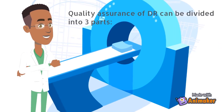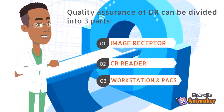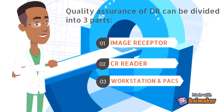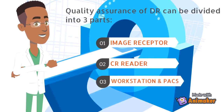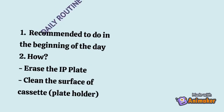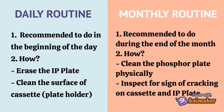Quality assurance of digital radiography can be divided into three parts: image receptor, CR reader, and the third part is workstation and PACS. The quality assurance can be conducted through a daily or monthly basis.